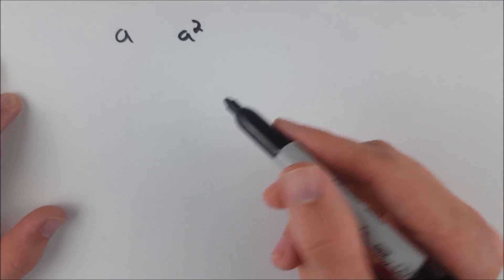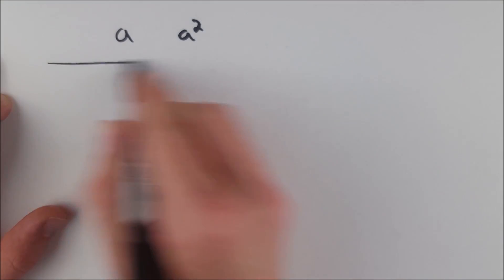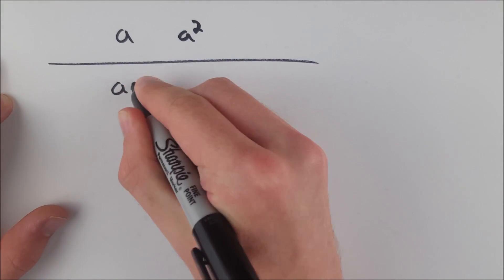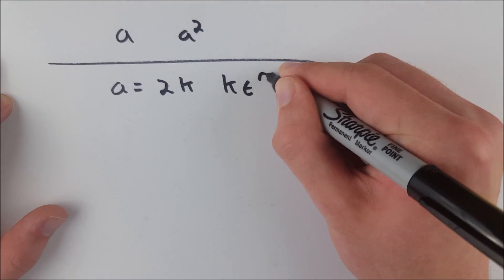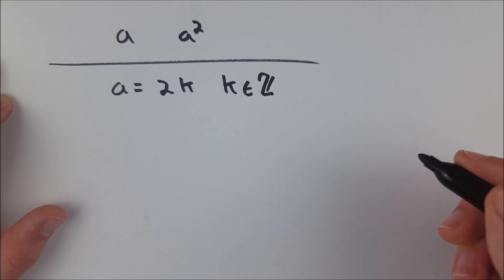We can suppose that a is even, that is in the if part of the statement we're proving. So therefore a is equal to 2k for some integer k, some k that's an element of the integers.